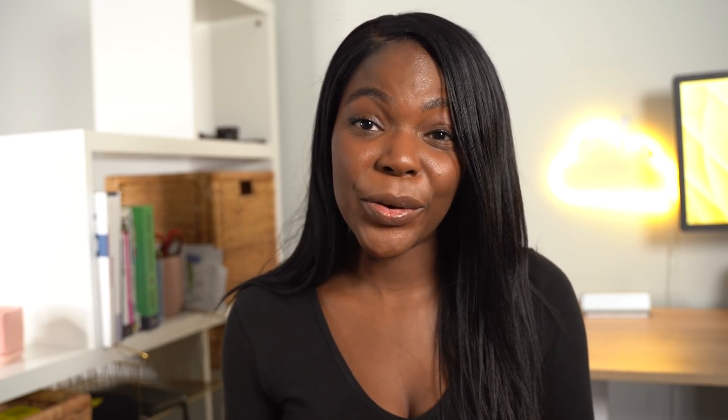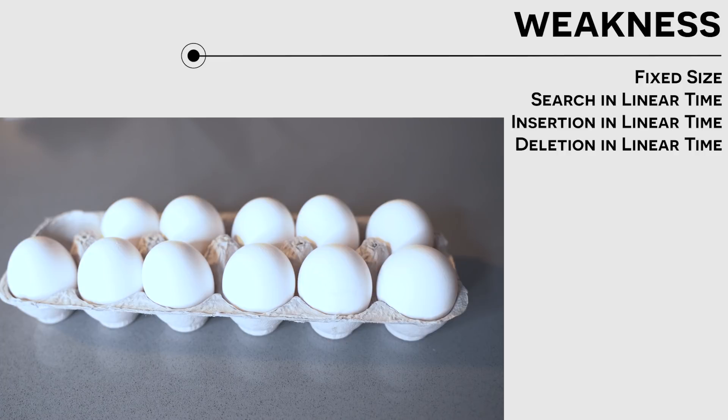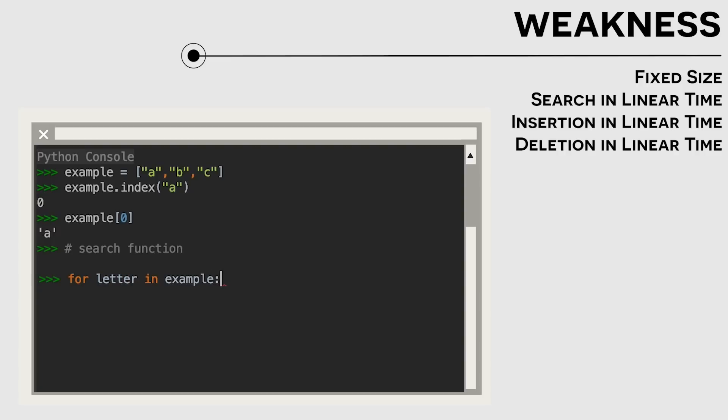Another disadvantage of egg cartons is the fact that searching for an egg is really slow. Let's say we wanted to find the largest egg but we have no idea where that egg lives and we don't know its index. At worst case, we would have to start from index zero and go through the entire carton until we found the egg. And this happens in linear time.